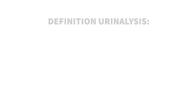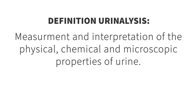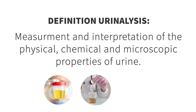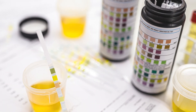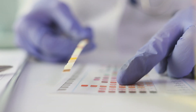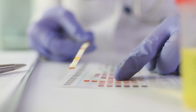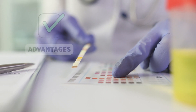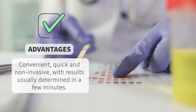Let's first start by defining a urinalysis. A urinalysis is the measurement and interpretation of the physical, chemical, and microscopic properties of urine. A urine sample is tested using dipsticks with reagent strips which become activated by immersion in the urine sample. The color changes on the reagent strips based on the various components of urine can be examined visually and compared to a color scale.